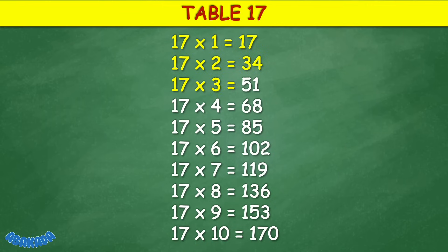Table 17: 17 times 1 equals 17, 17 times 2 equals 34, 17 times 3 equals 51, 17 times 4 equals 68, 17 times 5 equals 85, 17 times 6 equals 102, 17 times 7 equals 119.